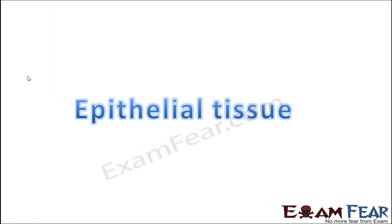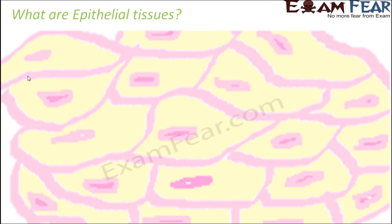We will start our discussion with epithelial tissue. What are epithelial tissues? The name must be telling something. What is the meaning of epithelial? Epi means above, and thelial means grow. So something which grows above is known as epithelial. So a rough idea is that it has to be something which is on the outer side or above something.